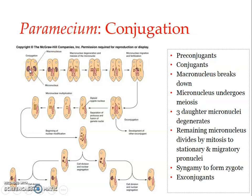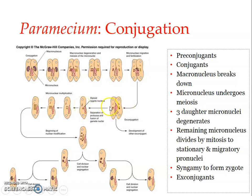The macronucleus is shown here in each mating type, and the micronucleus is also visible — colored red for one mating type and yellow for the other, just for clarity of tracing. What happens to the macronucleus is that it undergoes degeneration — it breaks down into fragments, which are then completely absorbed into the cytoplasm. So we can no longer trace the macronucleus after this point.